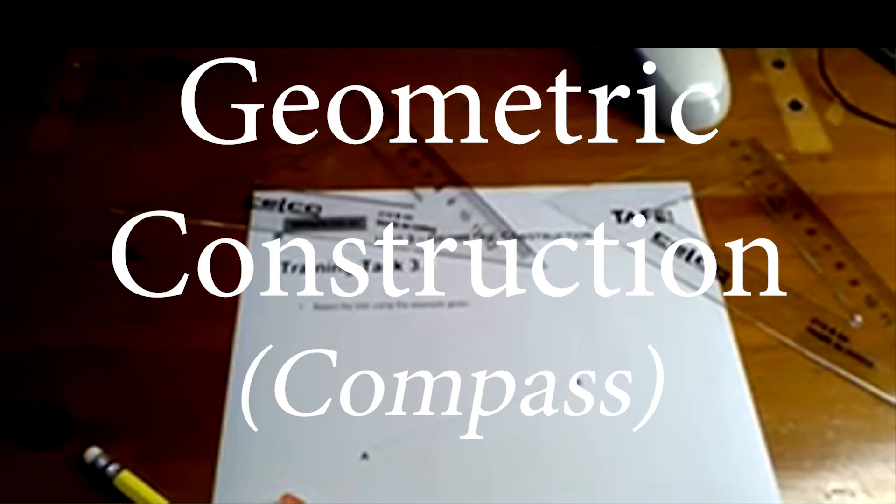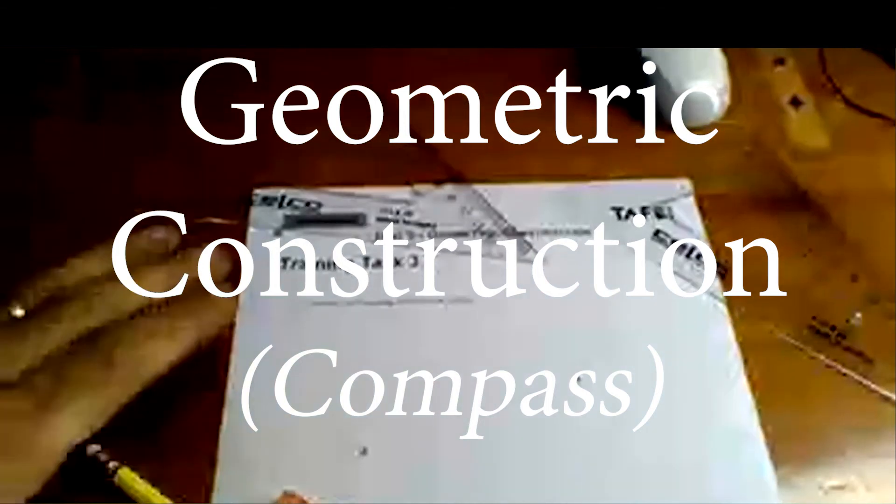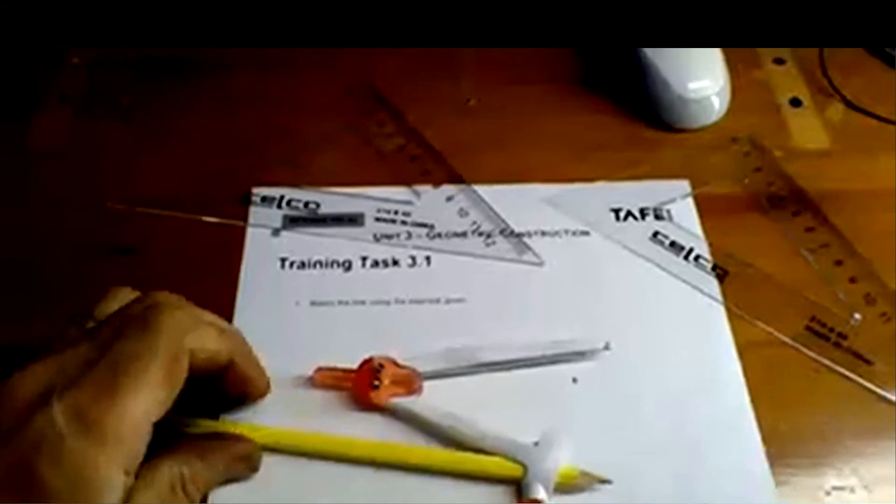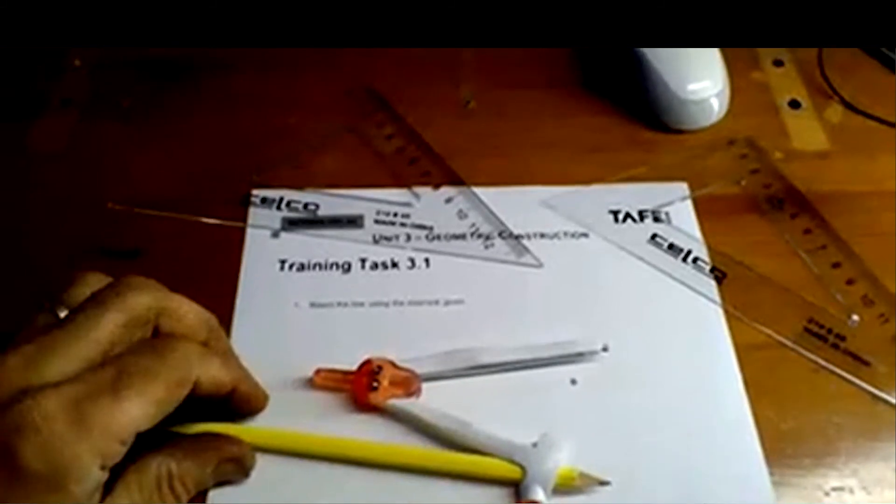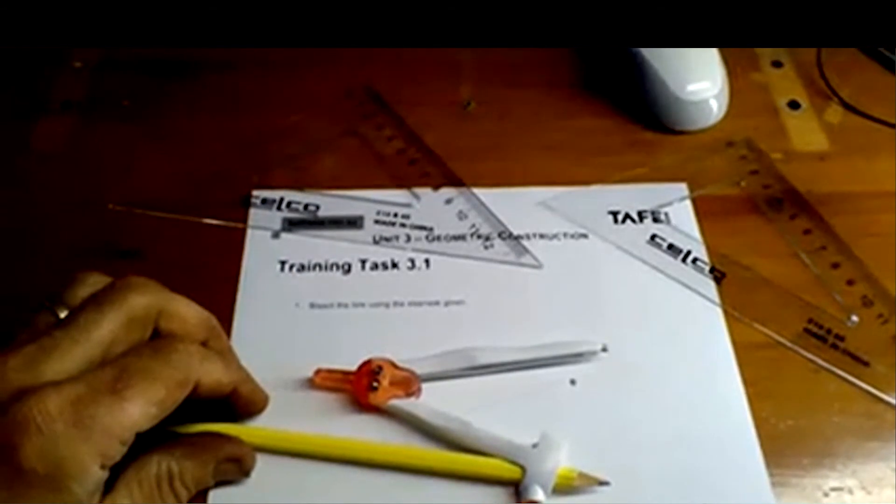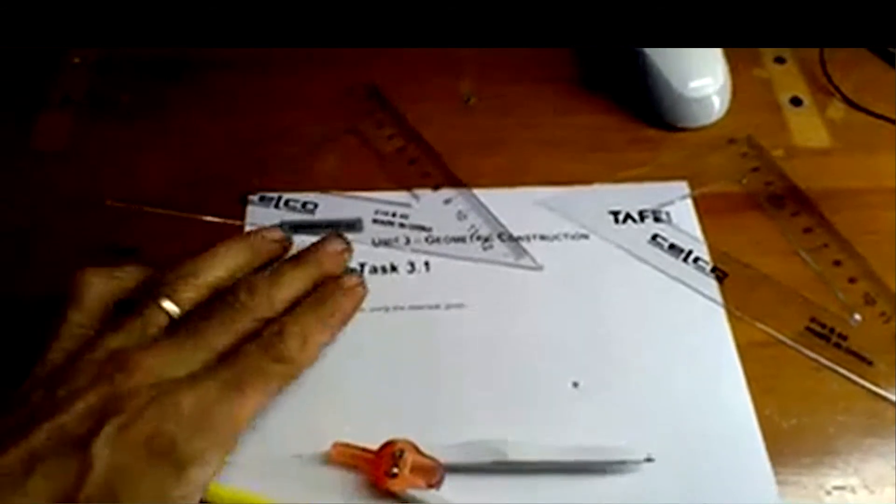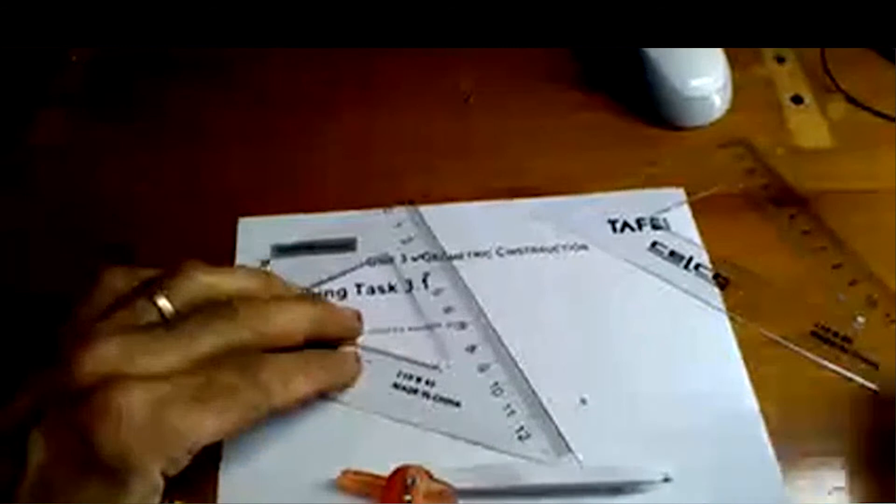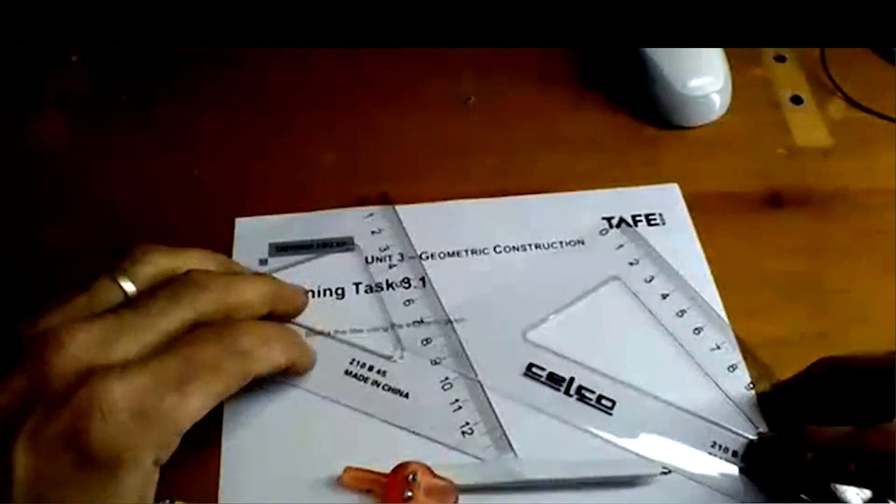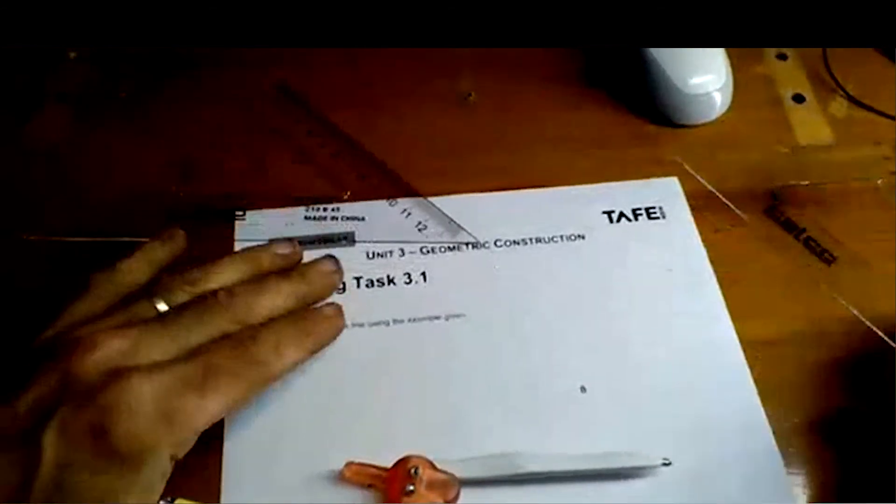This is a video for chapter 3 in drawing. I'm basically going to do a chapter 3 geometric construction hack for $3.50. The compass was $1, this set square was $1.25, and that was $1.25. So there you go, $3.50 hack.